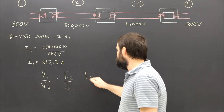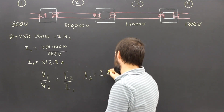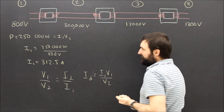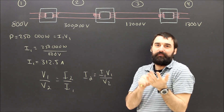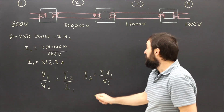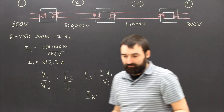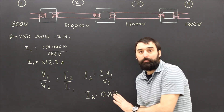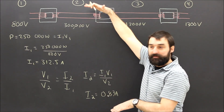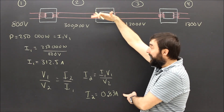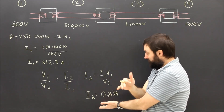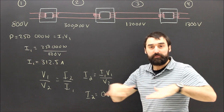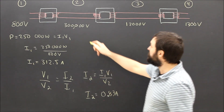I2 equals I1 times V1 over V2, but I1 times V1 is just the power — that's 250,000 watts. So I could really just say to myself: what's 250,000 divided by 300,000? And when I do that, current two is equal to 0.83 amps. And of course, that's the whole point of transformers — high voltage for transmission produces a really low current. The power is still 250,000 watts, but the current is tiny, so we don't waste as much energy in transmission.